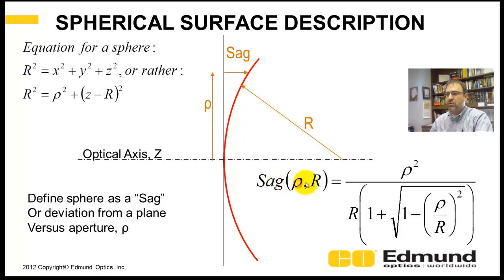The sag of a sphere is the distance the sphere is from this plane versus aperture. Your sag is a function of aperture and the radius of curvature, and it's this equation here.